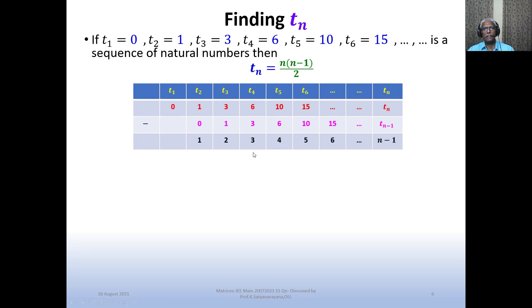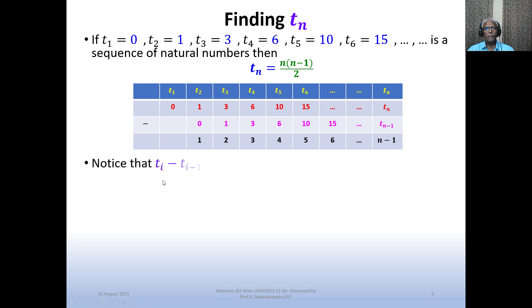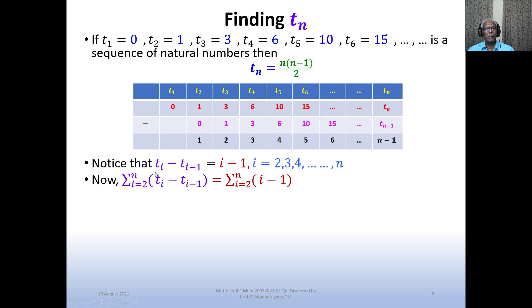Observing: tᵢ - tᵢ₋₁ = i - 1. So tₙ - tₙ₋₁ = n - 1. This holds for i = 2, 3, 4, ..., n. We now sum both sides: Σ(i=2 to n) of (tᵢ - tᵢ₋₁) = Σ(i=2 to n) of (i - 1).